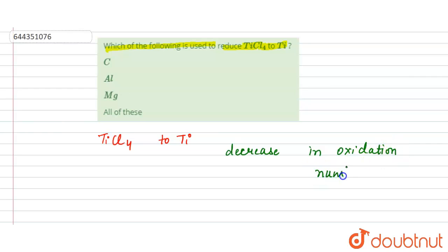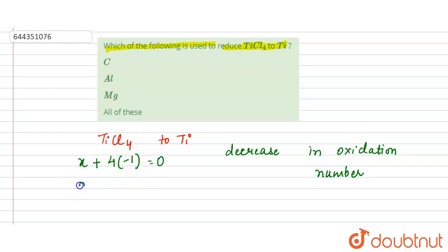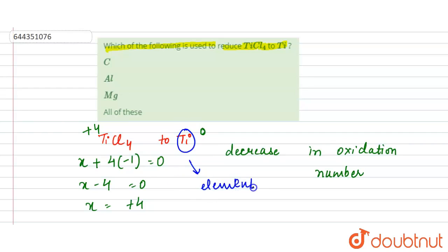We want the element, so let's find the oxidation state. In TiCl₄, we have x + (−1)×4 = 0, so x − 4 = 0, giving x = +4. So the oxidation state of titanium in TiCl₄ is +4, and we need it to become 0 — the elemental form.